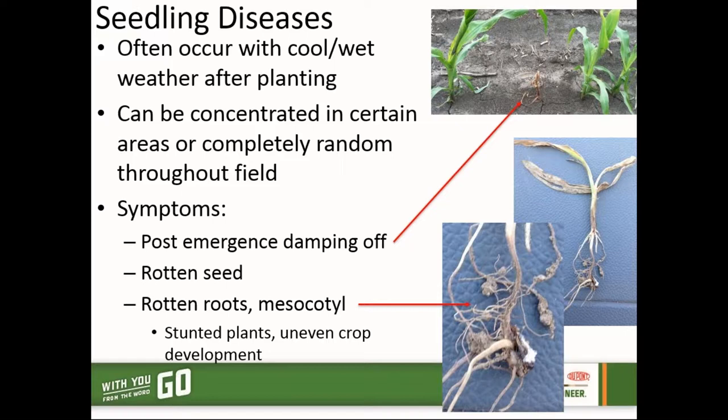Plants like this may survive this type of experience; however, they are going to be stunted and set back. When that is the case, it can lead to some uneven crop development — different growth stages within the corn down the row or across the field. That's something we need to keep in mind for management decisions down the road, and it explains why we might see some of this unevenness within the corn crop.